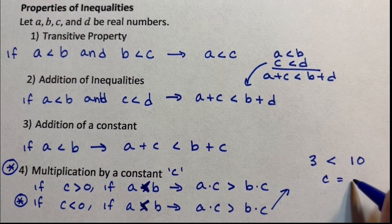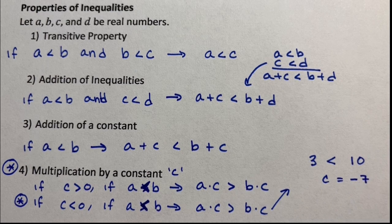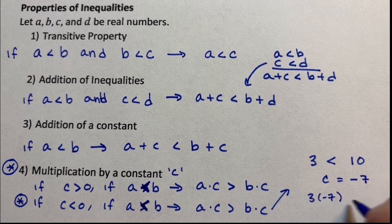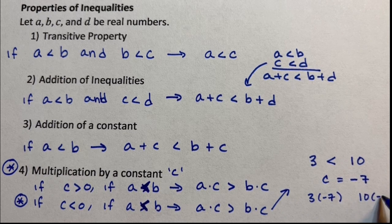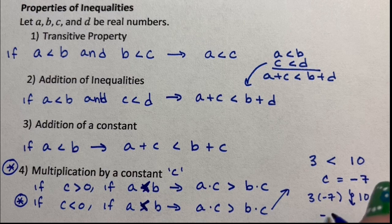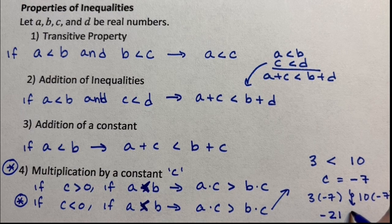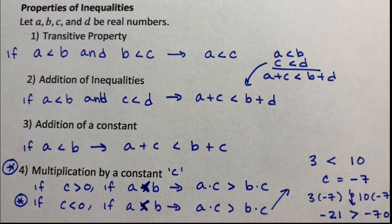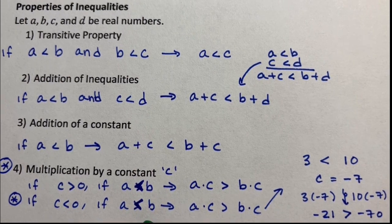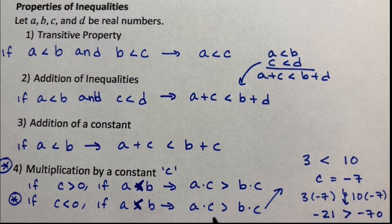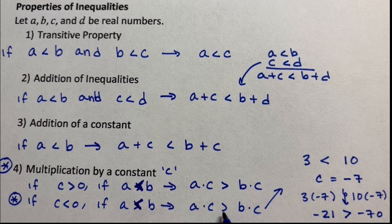So, 3 is less than 10. C is equal to negative 7. So if we multiply 3 times negative 7, 10 times negative 7, we need to flip the inequality over. So negative 21 is greater than negative 70. So if you multiply by a negative, then the inequality flips over.